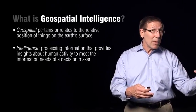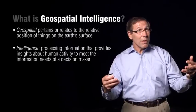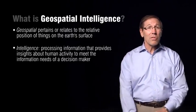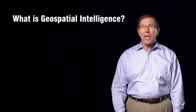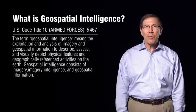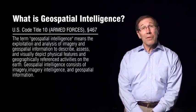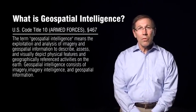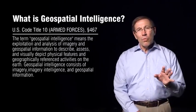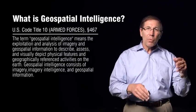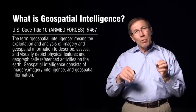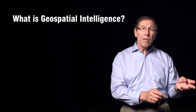Putting the two terms together: geospatial is about the Earth, and intelligence is information that helps decision makers. We're talking about geospatial things on the Earth that help the decision maker make decisions or provide them insights. In the United States, we actually have a legal definition of geospatial intelligence, or GeoInt — sort of unique; I haven't been able to find another country that has one. This definition helped form the U.S. National Geospatial Intelligence Agency, or NGA. Understand it was politically negotiated, although it's a good definition that really explains a lot.